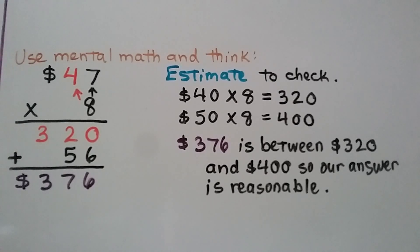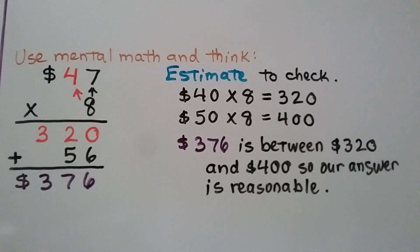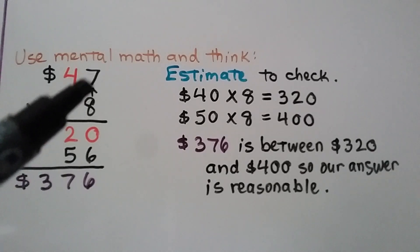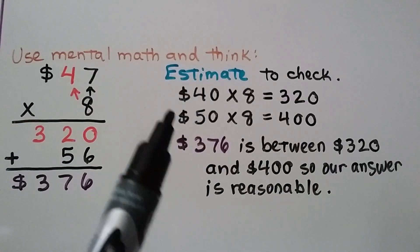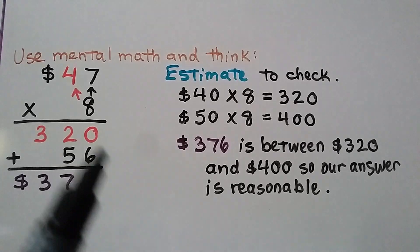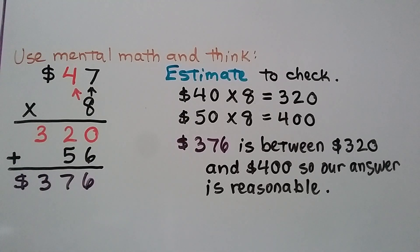If we're at a store and want to buy 8 items that cost $47, we can figure out if we have enough money. $47 times 8: we start with 8 times 40, which is 320, and 8 times 7, which is 56. We add them up and get $376. We can estimate to check — a low estimate is $40 and a high is $50, giving 320 and 400. Our answer of $376 is between 320 and 400, so it's reasonable.